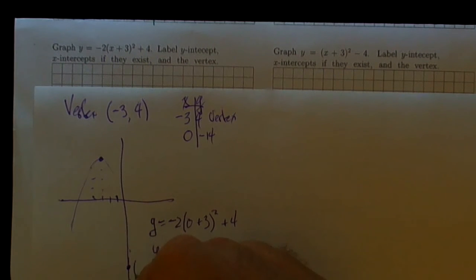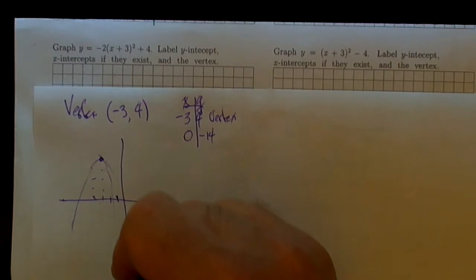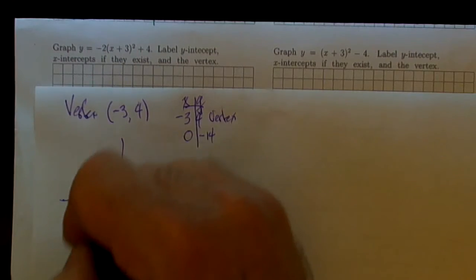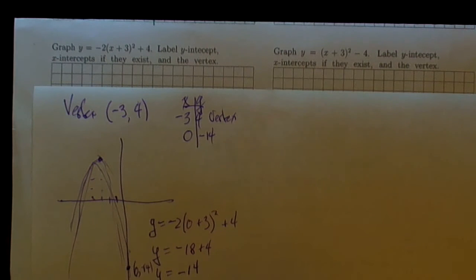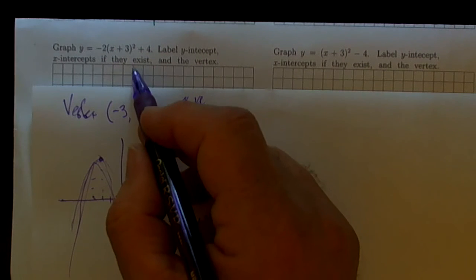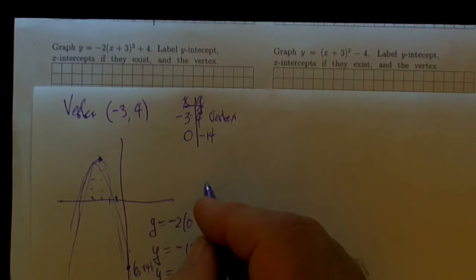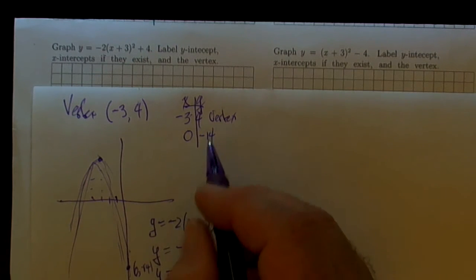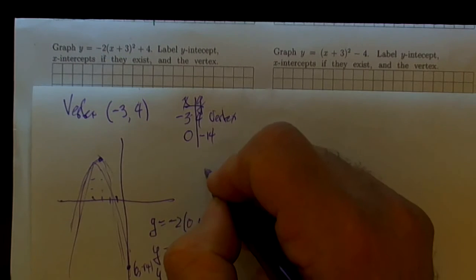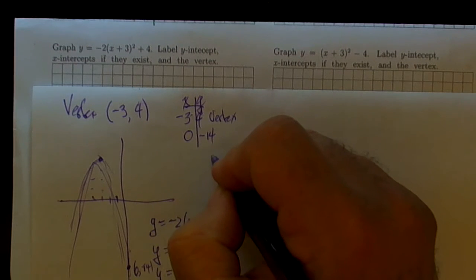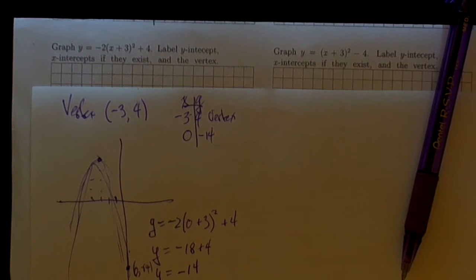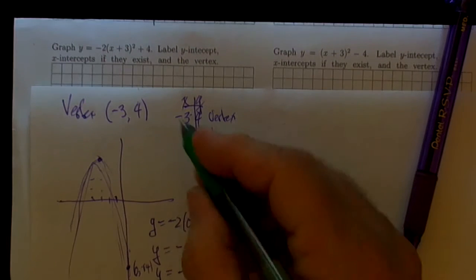So we've got a pretty good idea of what this graph looks like. It definitely has some x-intercepts, so we're going to need to find those x-intercepts. One thing that we could do is multiply it all out and use the quadratic formula, but look at the function a little bit more closely.